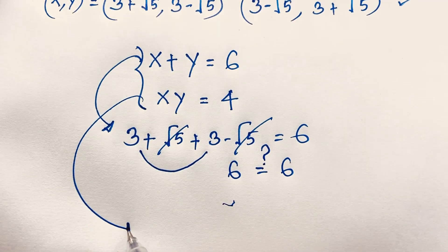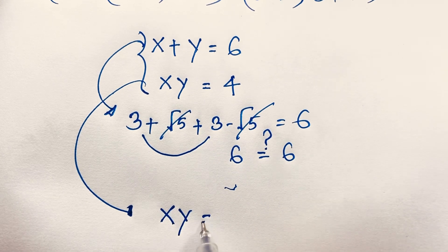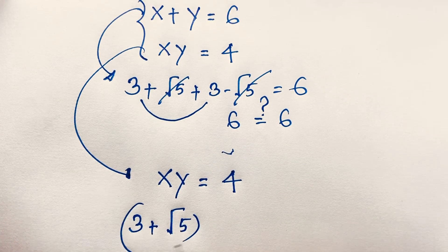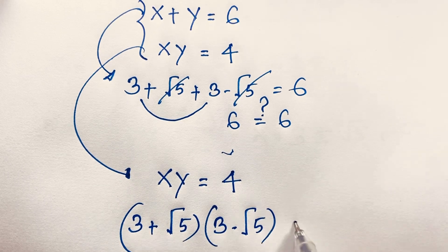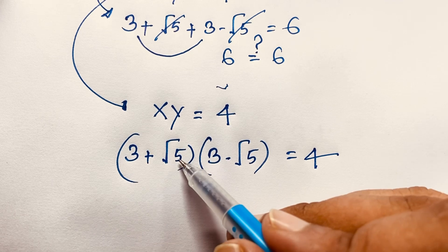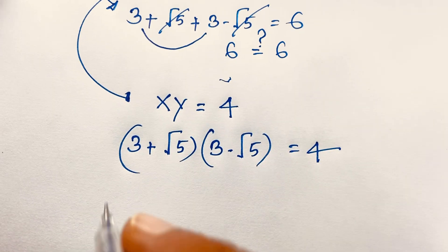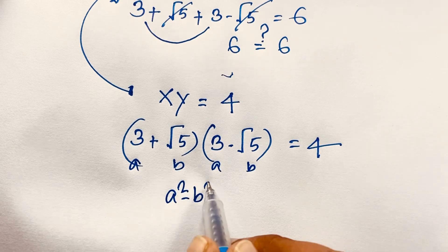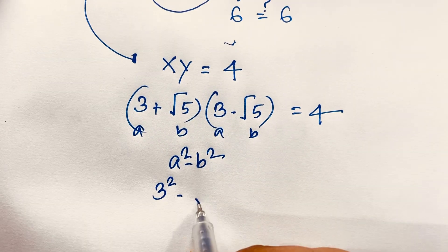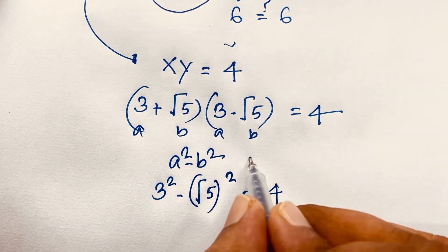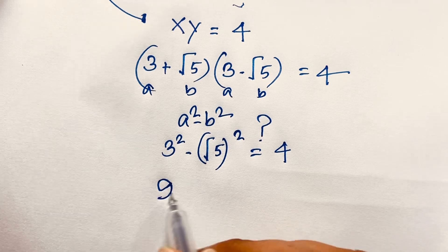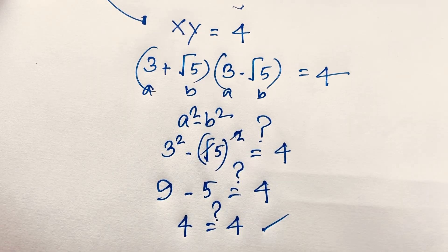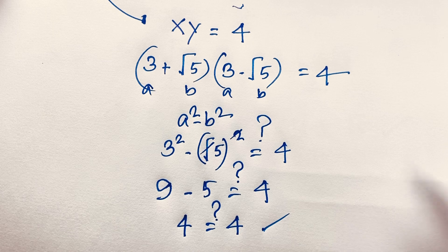Now let's verify xy equals 4. We have x equals 3 plus root 5 and y equals 3 minus root 5. Applying the formula (a plus b)(a minus b) equals a squared minus b squared, with a equal to 3 and b equal to root 5: 3 squared minus (root 5) squared equals 9 minus 5 equals 4. So 4 equals 4, and left-hand side equals right-hand side in this maths problem.